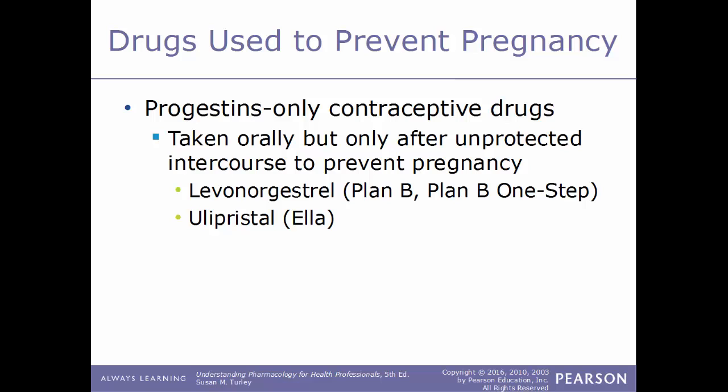Some progestin-only contraceptive drugs can be taken orally only after unprotected intercourse to prevent pregnancy — these are the morning-after pills. Examples include levonorgestrel, sold under the trade names Plan B or Plan B One-Step, and ulipristal, sold under the trade name Ella.